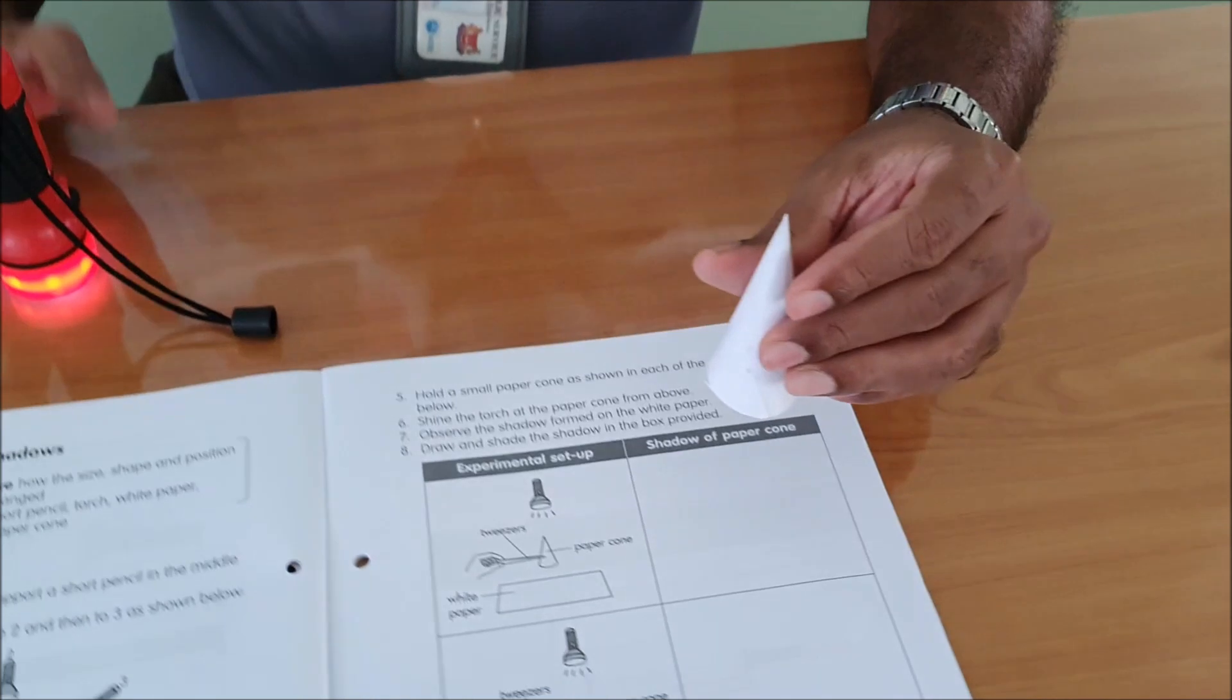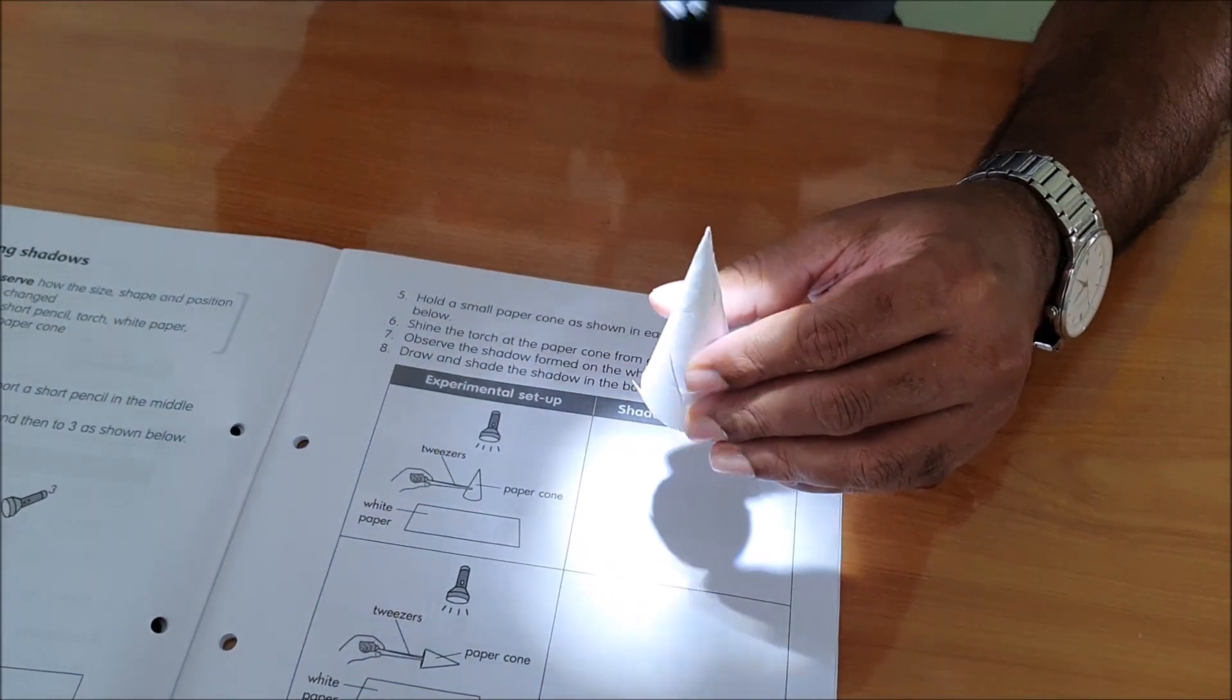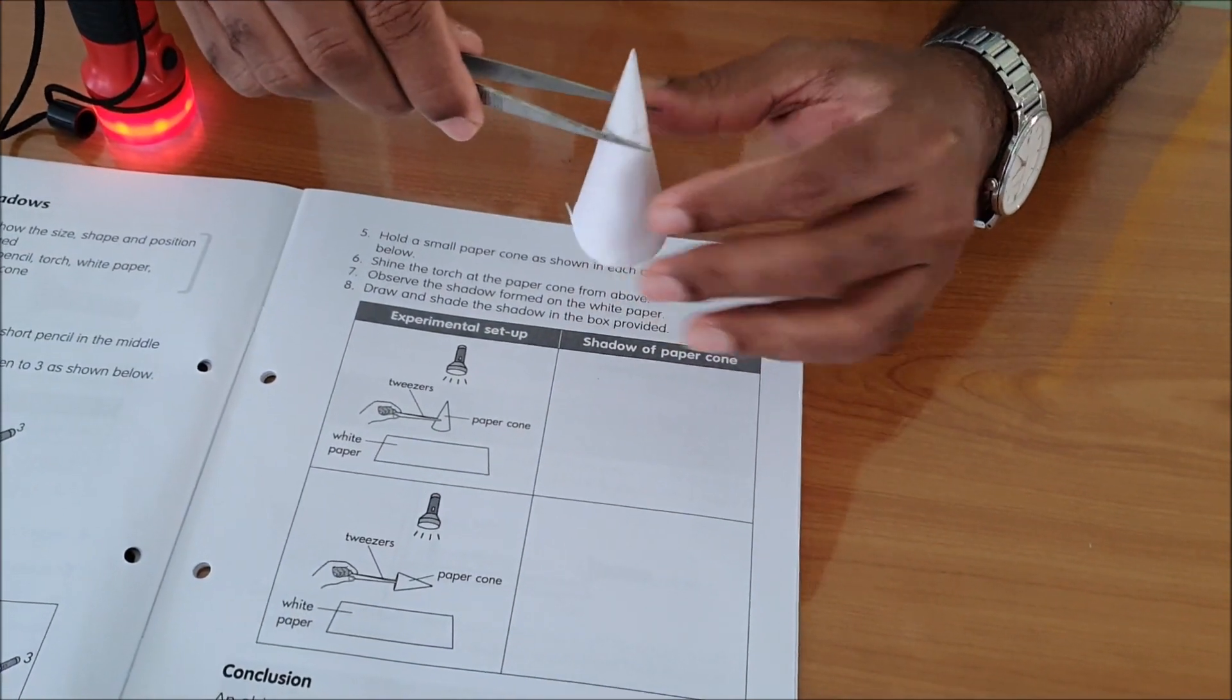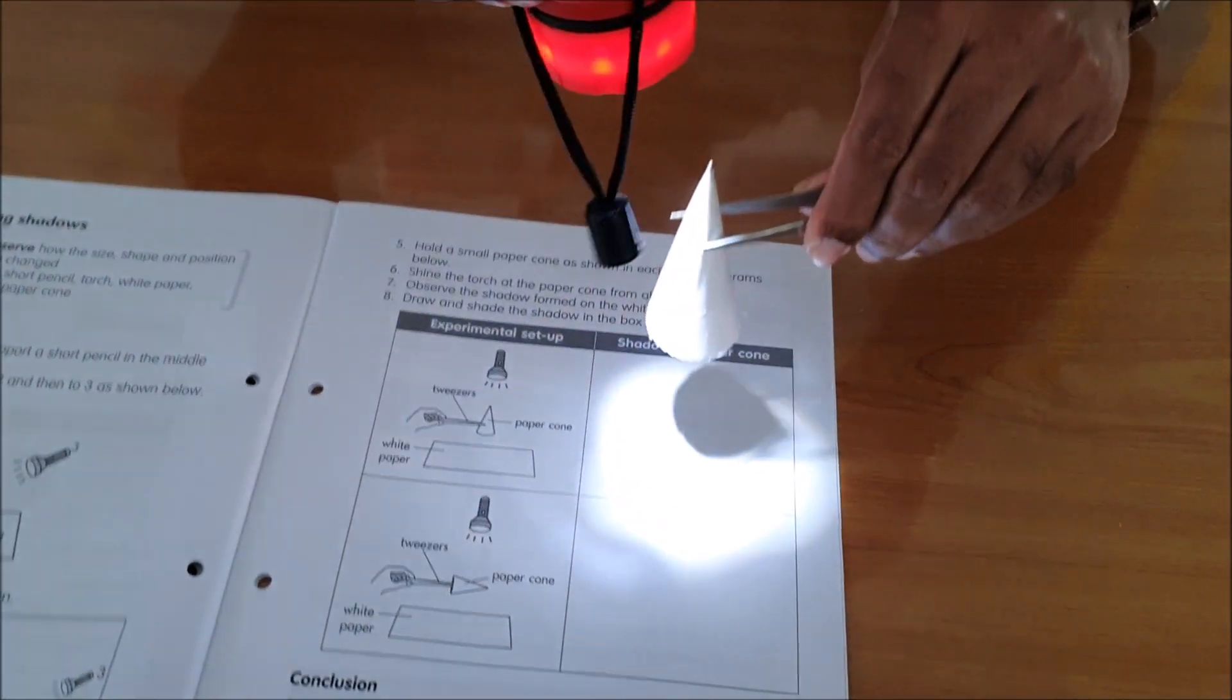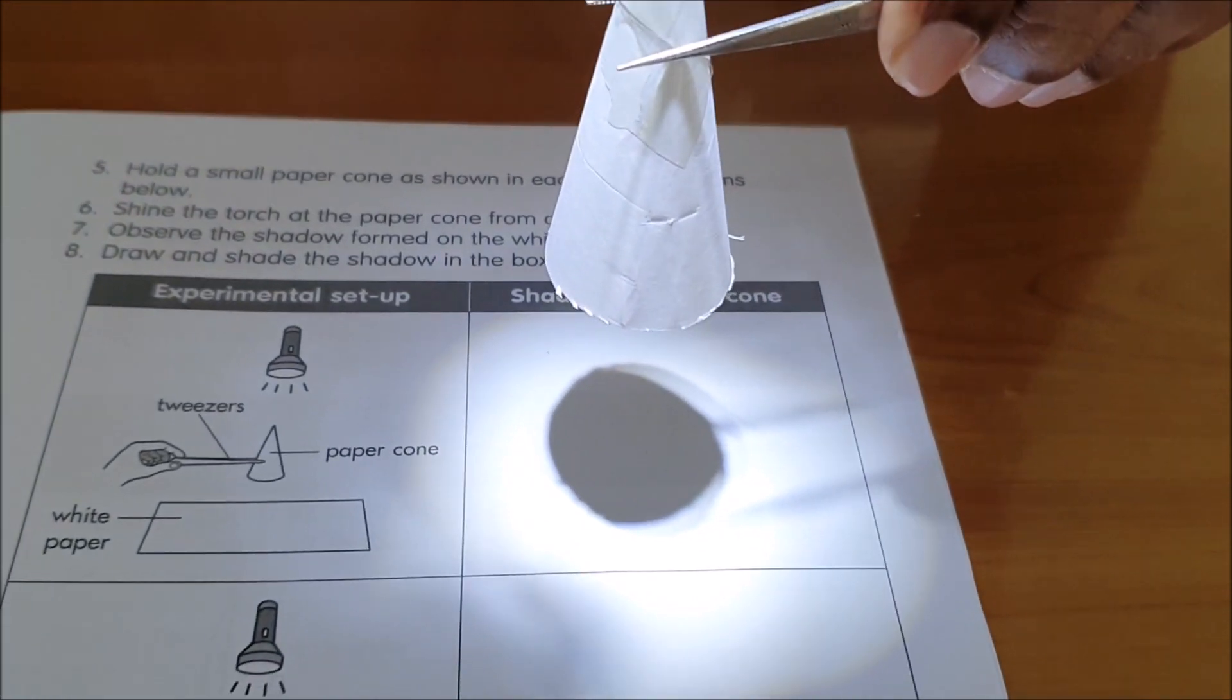And now I am going to shine the light from the top and look at the paper cone. Let me use a tweezer so it will be more clear. Okay, you can see the shape when I am shining the light from the top.